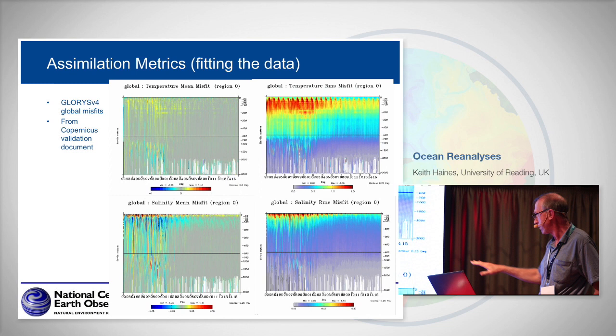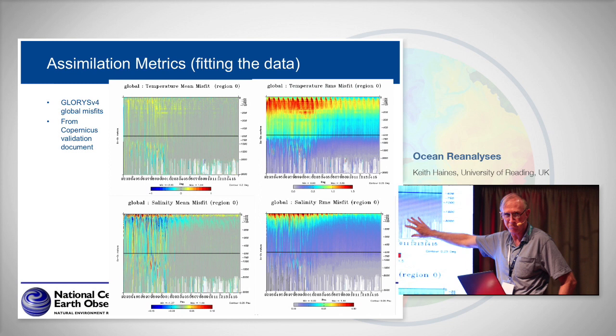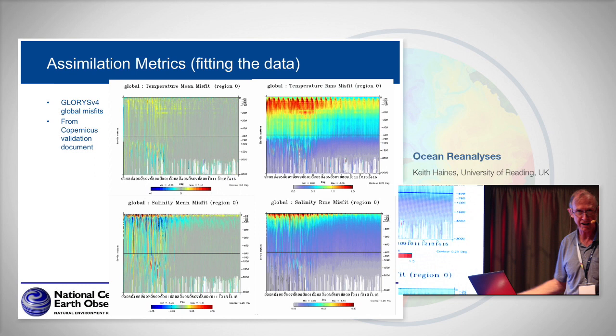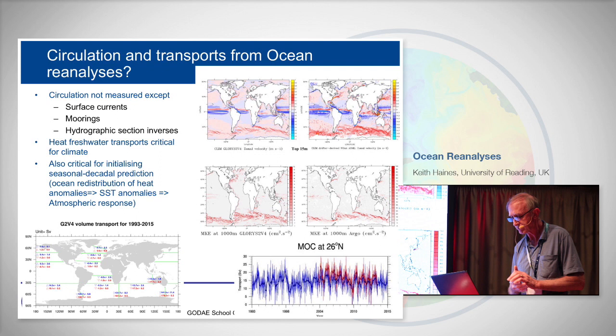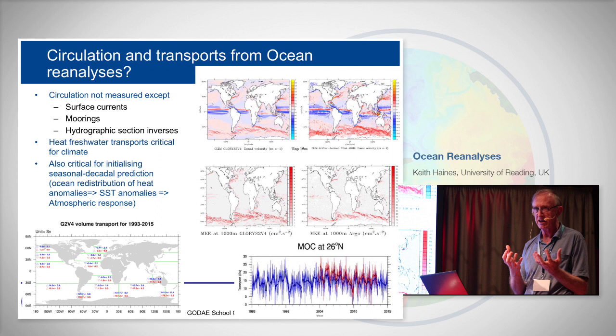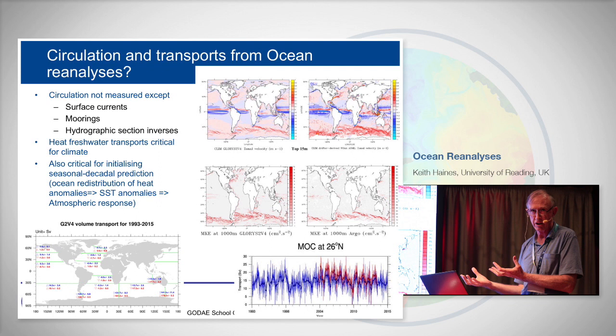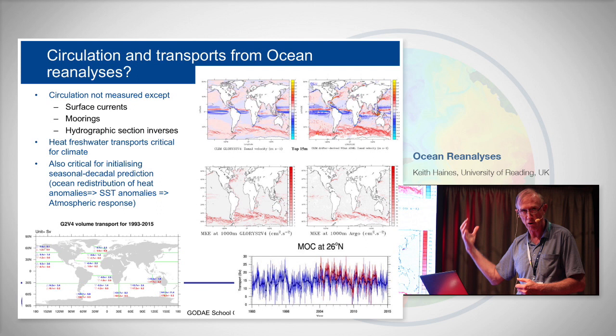Even in the more recent period, wherever you have actual deep observations, the models still aren't doing very well — not surprisingly, since you haven't got much data going in there. So when you do get new data, it's usually telling you the model is quite wrong. Of course, this is data you're actually putting in. If you actually look at circulation and transports — one of the things you'd really like to get out of these reanalyses — because largely you're not measuring these things. If you just want to know the temperature distribution in the ocean on a large scale, you can go to a data-only product now, since the Argo data set is very good in most parts of the ocean.